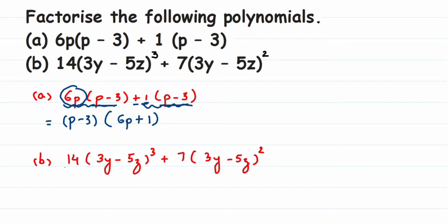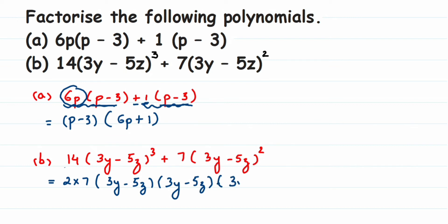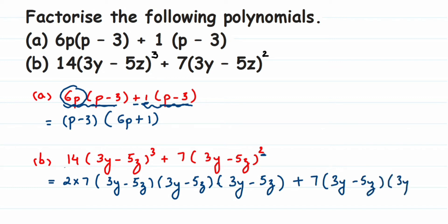Notice that 14 can be written as 2 into 7, and (3y - 5z) to the power 3 means the term is multiplied three times. I'm going to expand this to show how we get the answer — you can skip this step. So I expand: 2 into 7 into (3y - 5z) multiplied three times, plus 7 into (3y - 5z) multiplied two times.